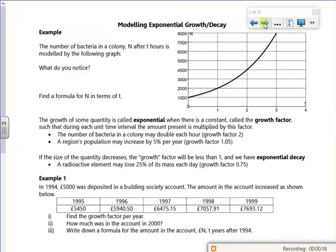It says the number of bacteria in a colony, N after t hours. You can see the N there and the t there. What do you notice? It started out at a thousand when t is zero, but when t is one it's two thousand, when t is two it's four thousand, when t is three it's eight thousand. So you can spot that the number of bacteria doubles every hour.